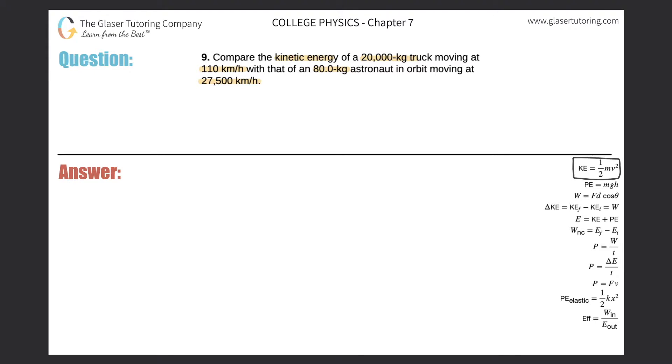Alright, so here's the kinetic energy formula. This says that the kinetic energy of an object is equal to one half multiplied by the mass of that object that's moving, multiplied by its velocity squared. Now remember, mass is in kilograms, velocity is in meters per second.